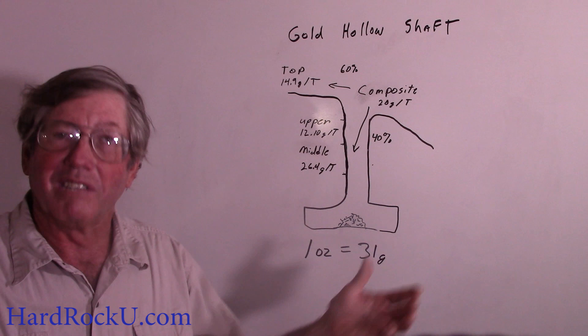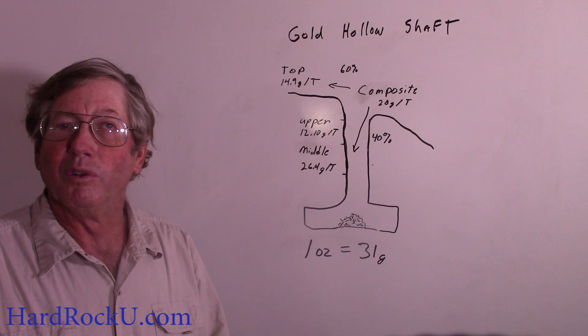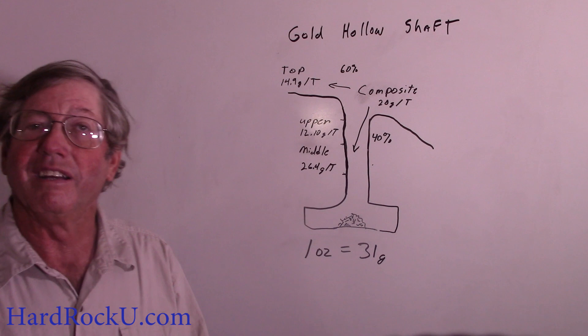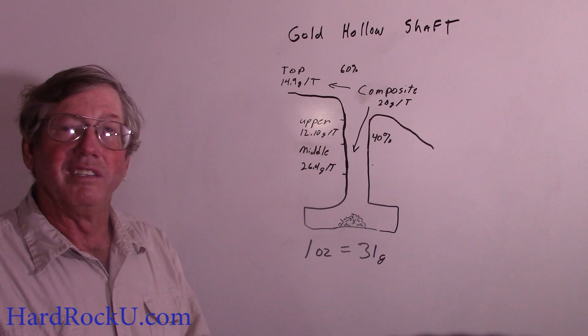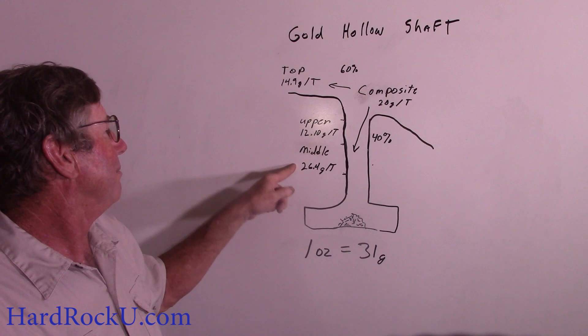We use grams per ton because that's what the laboratory I use provides. It's becoming more and more the industry standard worldwide, especially in other countries where it's all metric — grams per metric ton, or a thousand kilos — and that works out to be parts per million. One ounce equals 31 grams. So at the top it was about a half an ounce, down in the upper shaft about a third of an ounce, and in the middle about 0.85 or so. There's good gold here, but it's only a six-inch wide vein, so I'm not getting real excited about this, and I'll explain why in my next video on micromining economics.